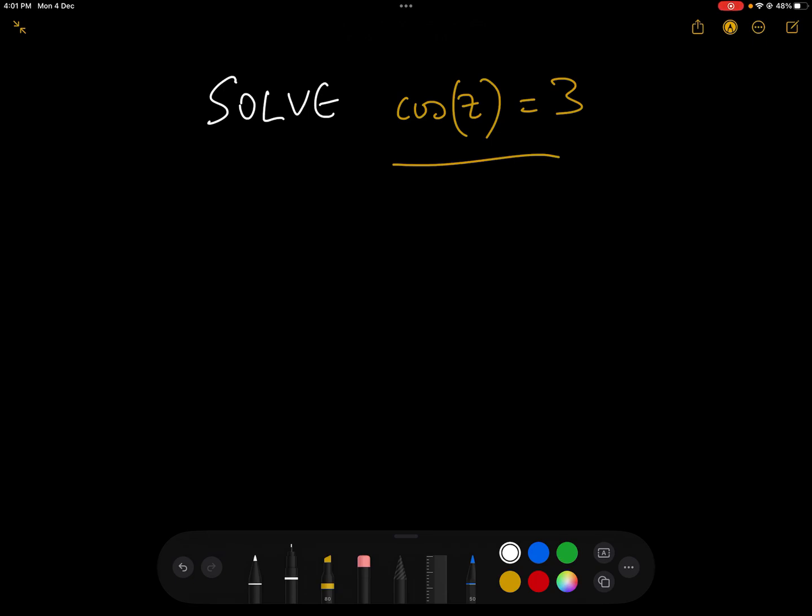Okay, so we need to solve the equation cos(z) = 3. Now anyone who's done traditional maths would know that if we look at the real value of cos(theta) or whatever, it moves approximately like this,